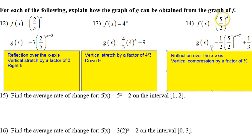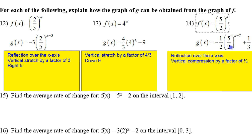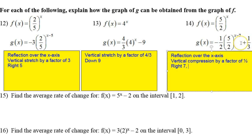Ignore the 5 over 2, because that's part of the parent function. The minus 7 is going to be a shift right 7, so I'm just going to put right 7. And then the plus 1 third — this is up/down motion, so I'm just going to say up 1 third. That's it for the transformations.